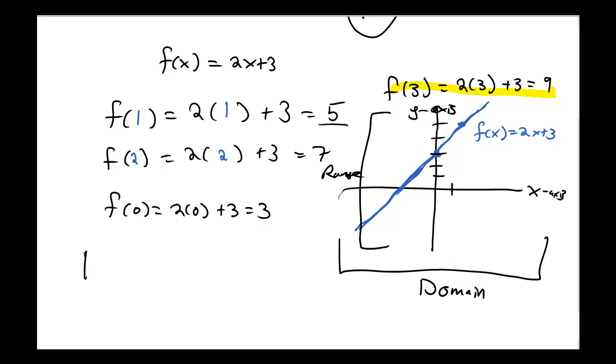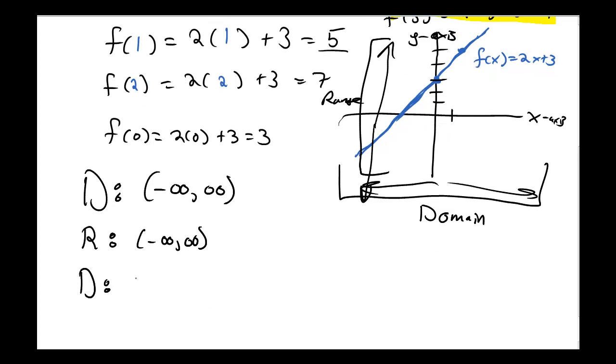My domain goes from negative infinity on the left all the way to positive infinity on the right. My range goes from negative infinity on its way down and goes all the way up to positive infinity on its way up.